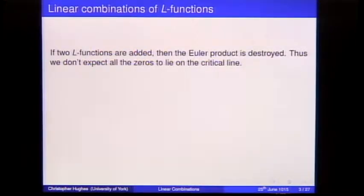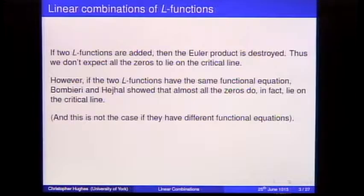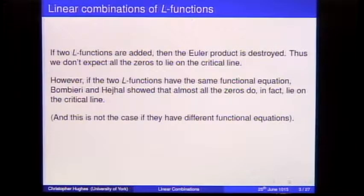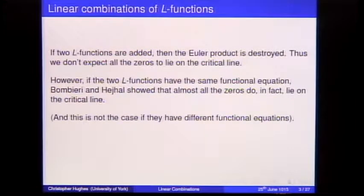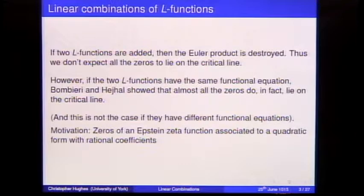What Bombieri and Hejhal showed was that if you choose two L-functions which have the same functional equation, then amazingly, 100% asymptotically of the zeros lie on the critical line. This is certainly not the case if the functional equations are different. I'm going to spend a little bit of time explaining why that is true, but it's not my result.